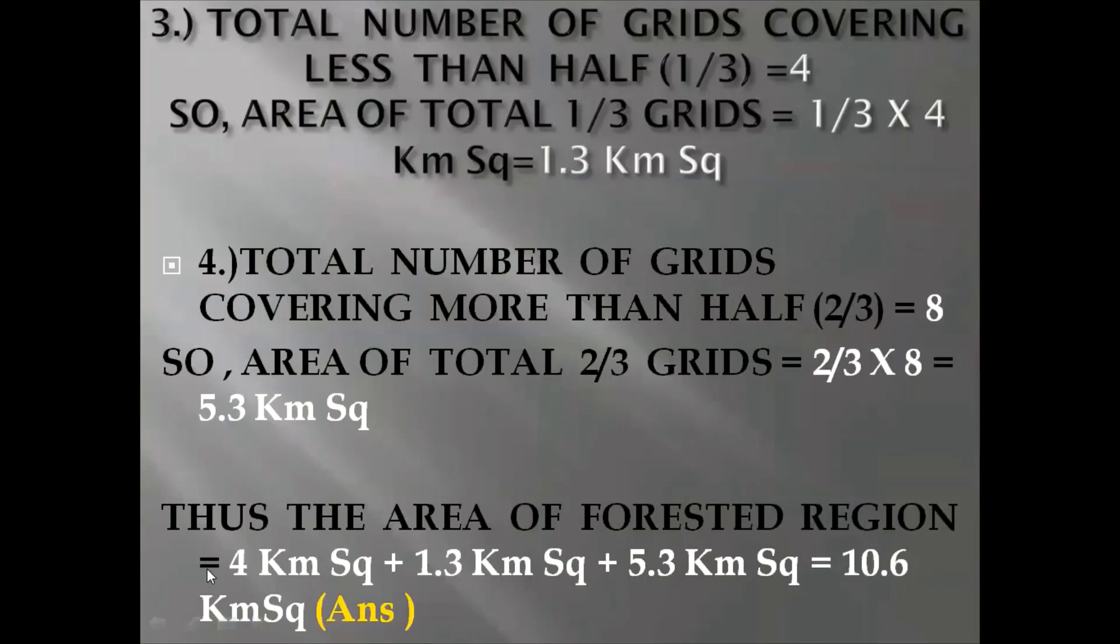Finally you have to add all the values to get the total area of forested region. I have done and I have got the answer 10.6 kilometer square.